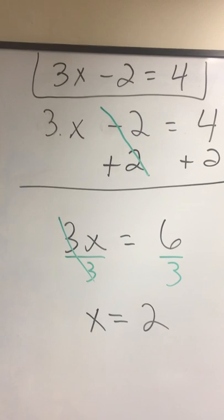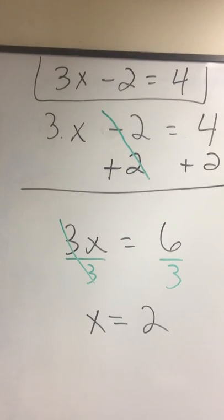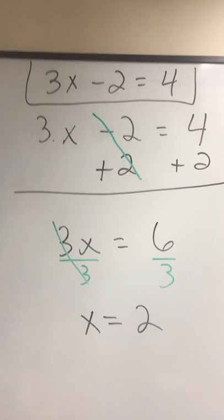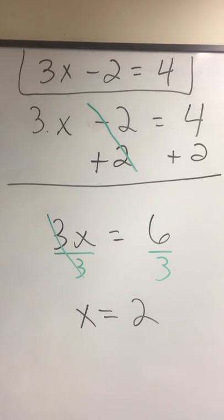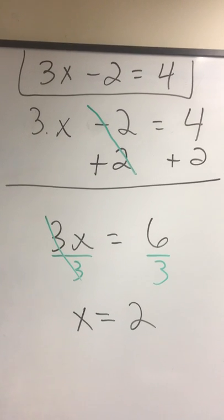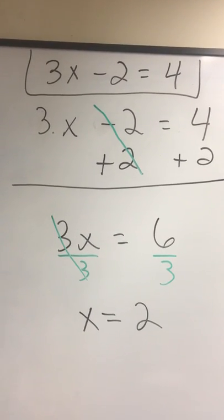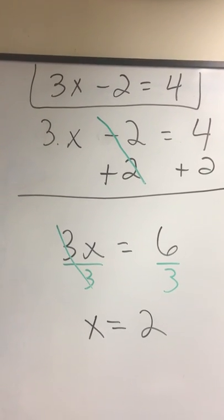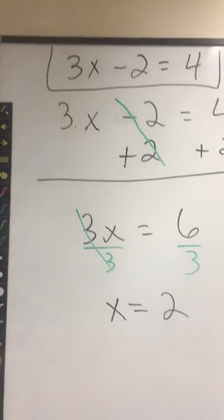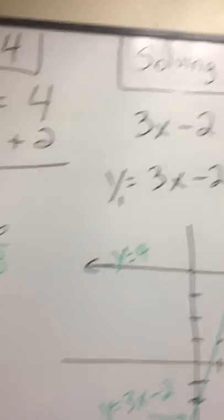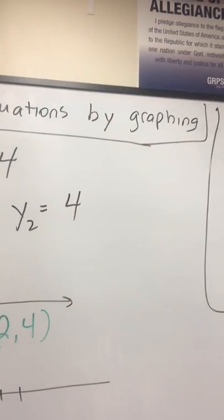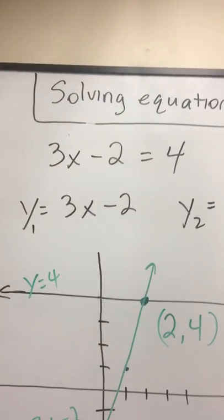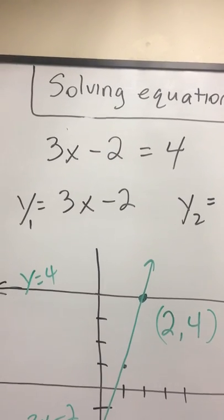But let's consider, what if we tried to solve this by graphing? A lot of people have graphing calculators, and it would make it easier in some respects, especially if you didn't know these steps or have them all down. You still have to have a basis of graphing though. I'm going to step over here to the exact same equation, and I have solving equations by graphing up there. So there's my 3x - 2 = 4.